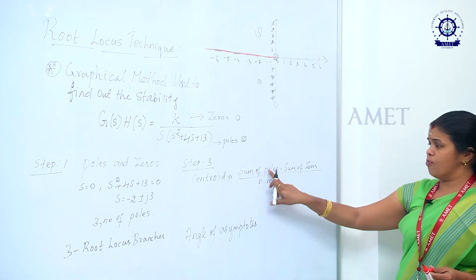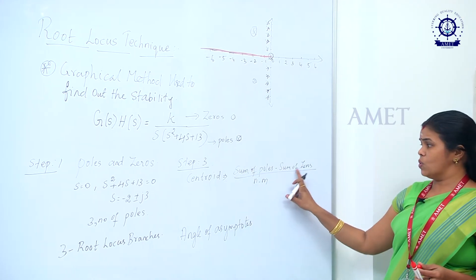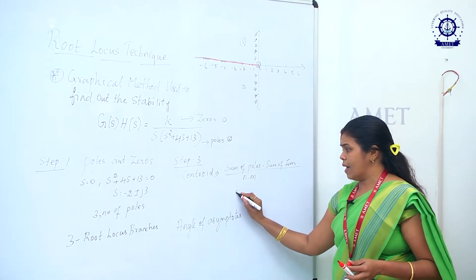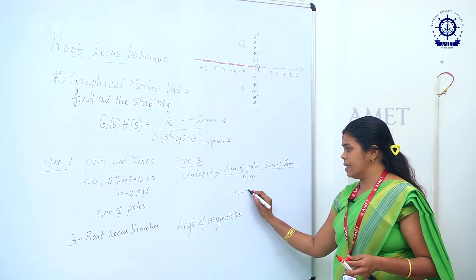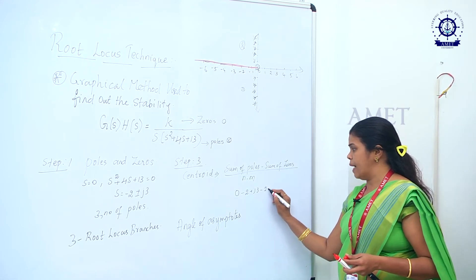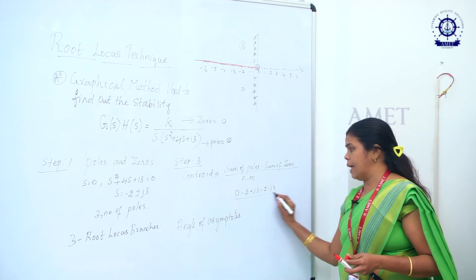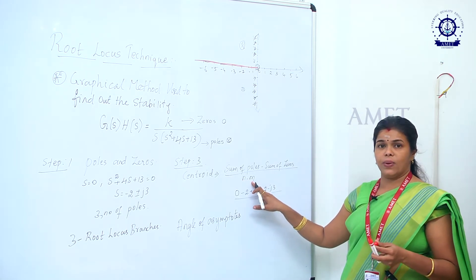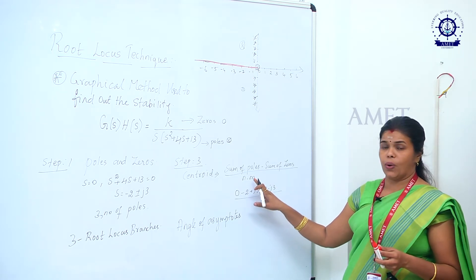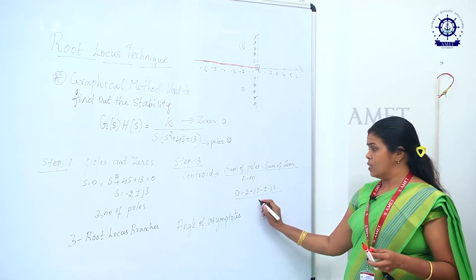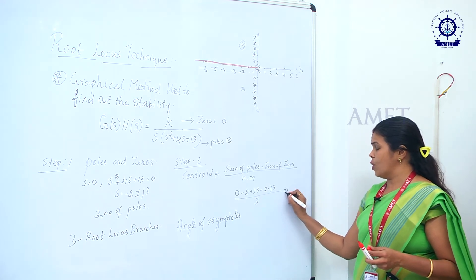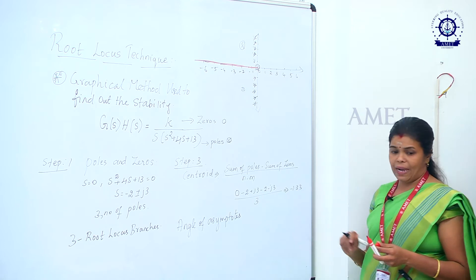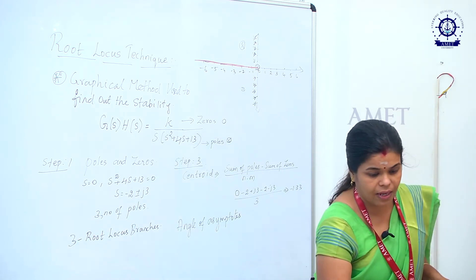The sum of poles is: 0 + (−2 + j3) + (−2 − j3), and there are no zeros. n = 3 and m = 0, so n − m = 3. Doing the calculation, the centroid value equals −1.33. That is the centroid.